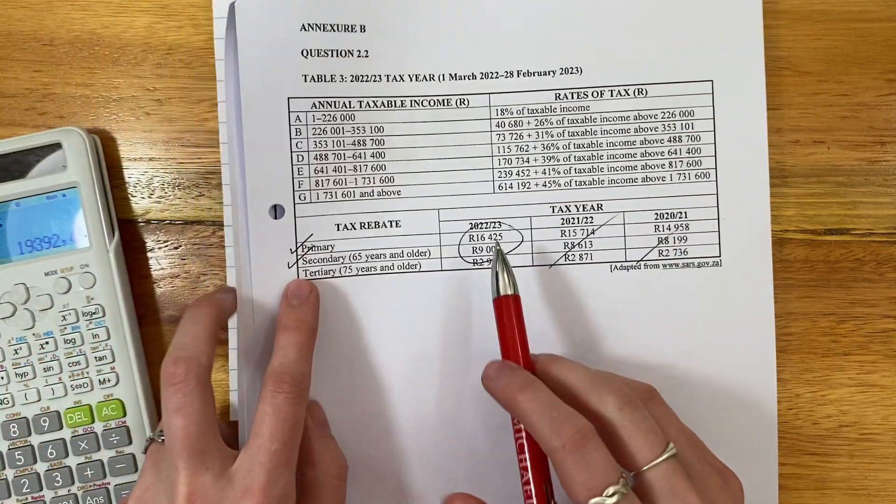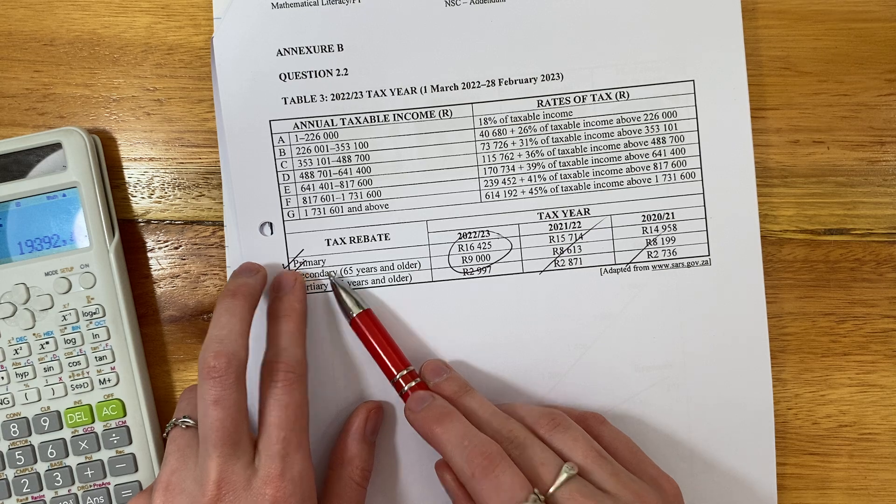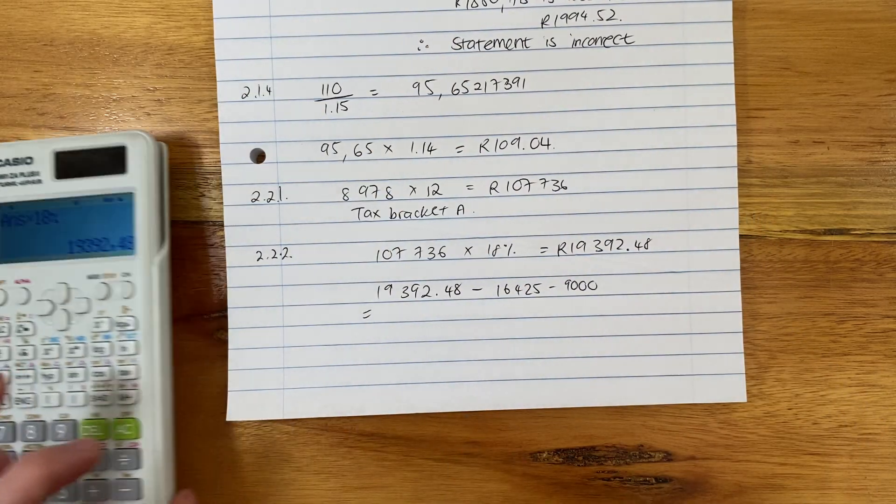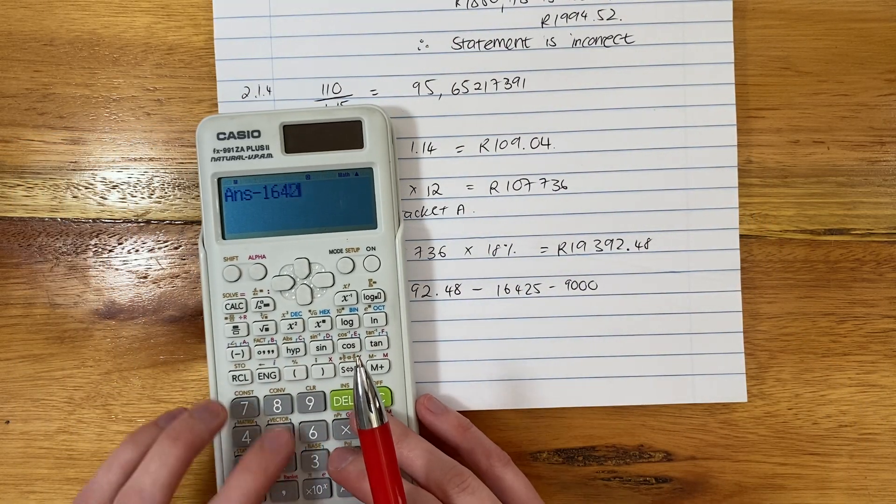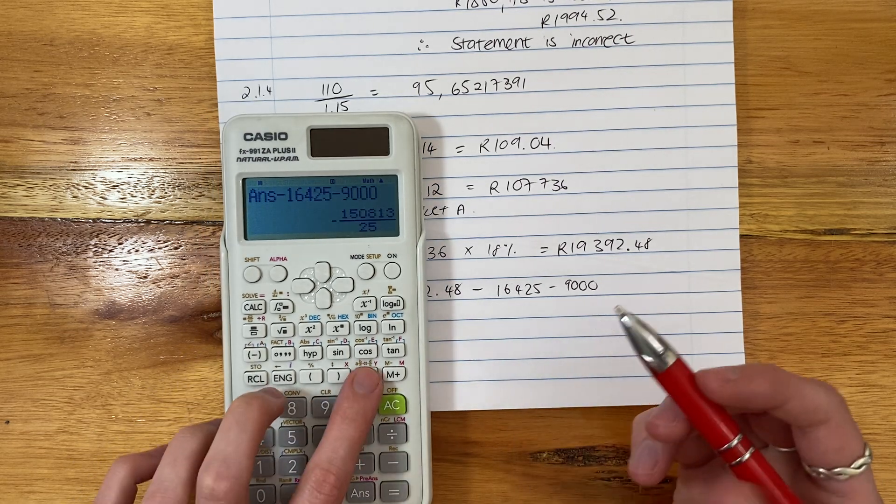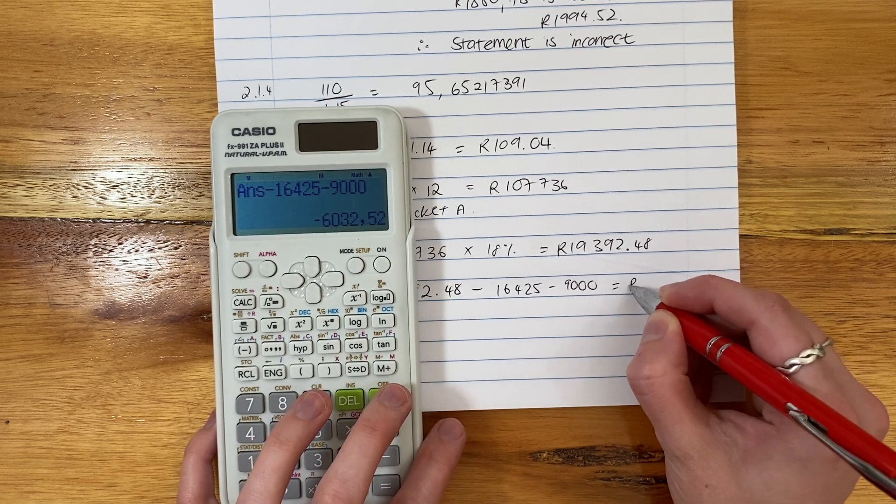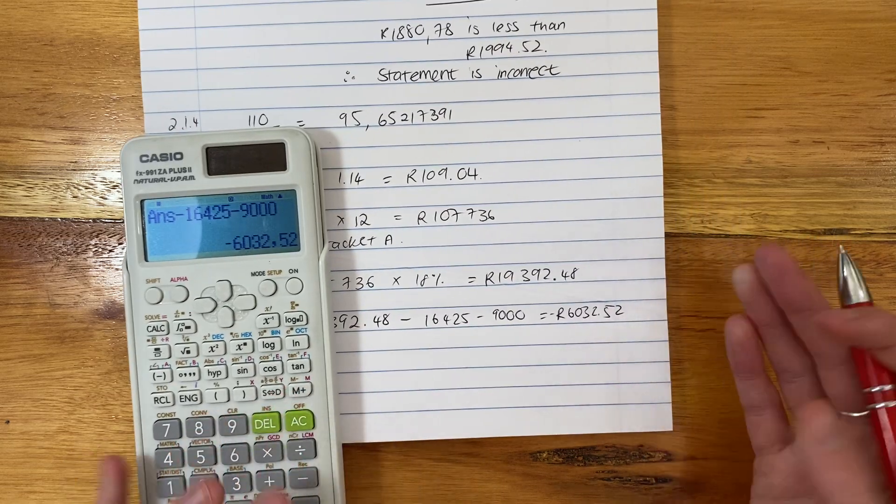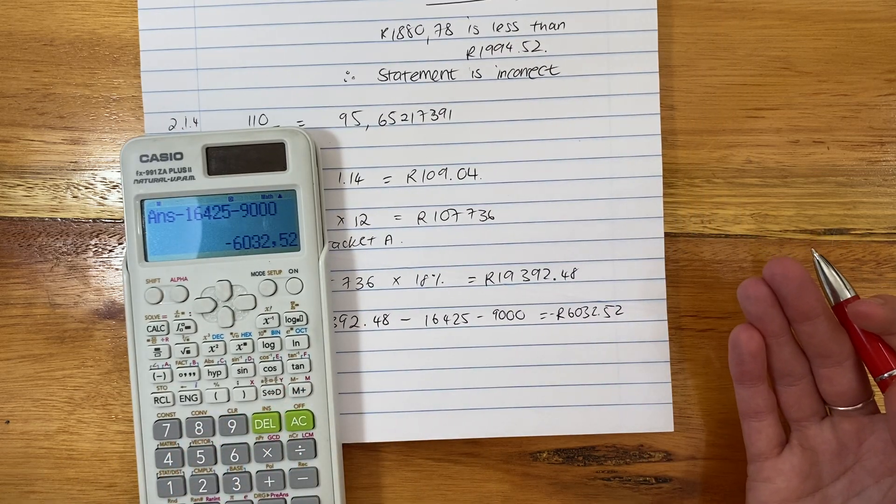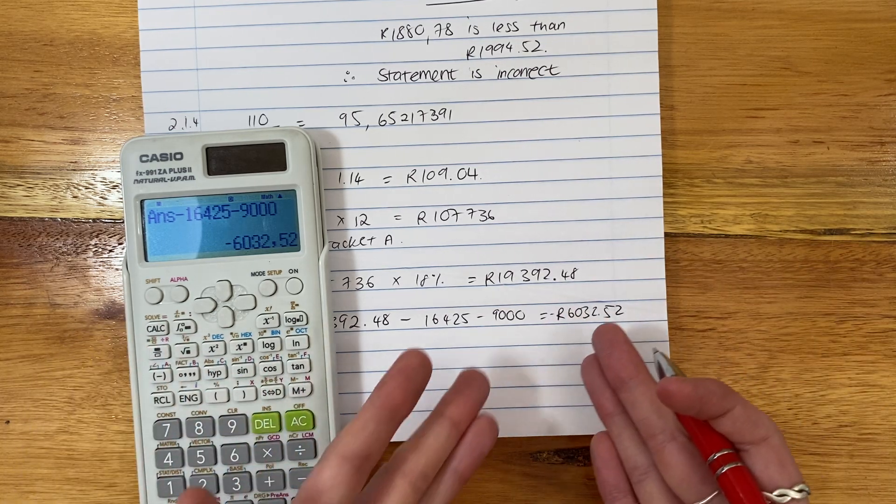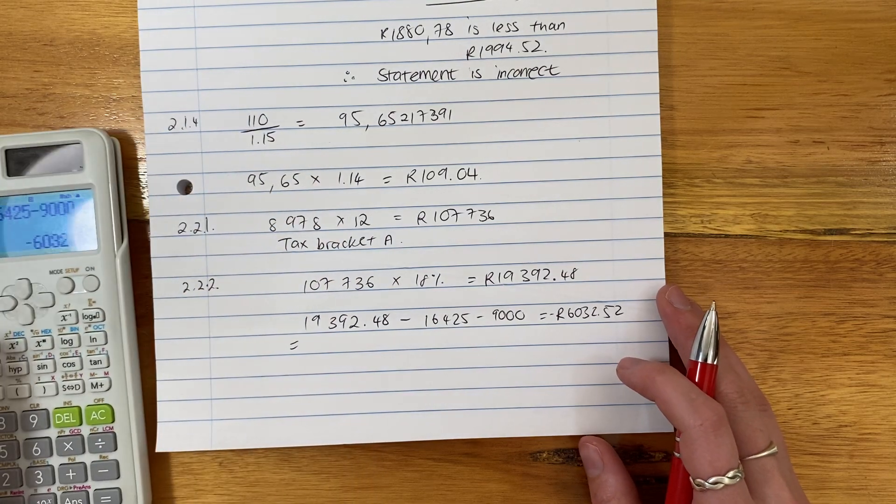So we then say, well, this 19,000 rand, we're going to subtract from it our two rebates. Our first rebate being our primary and then our secondary. So remember, if you qualify for the secondary, you also qualify for the primary. If you qualify for the tertiary, you get the secondary and primary as well. So it's like cumulative. Very important to note. So we have this. We then say, subtract. And we subtract the other one. Be careful you type it in correctly. And it gives me negative 6032.52.